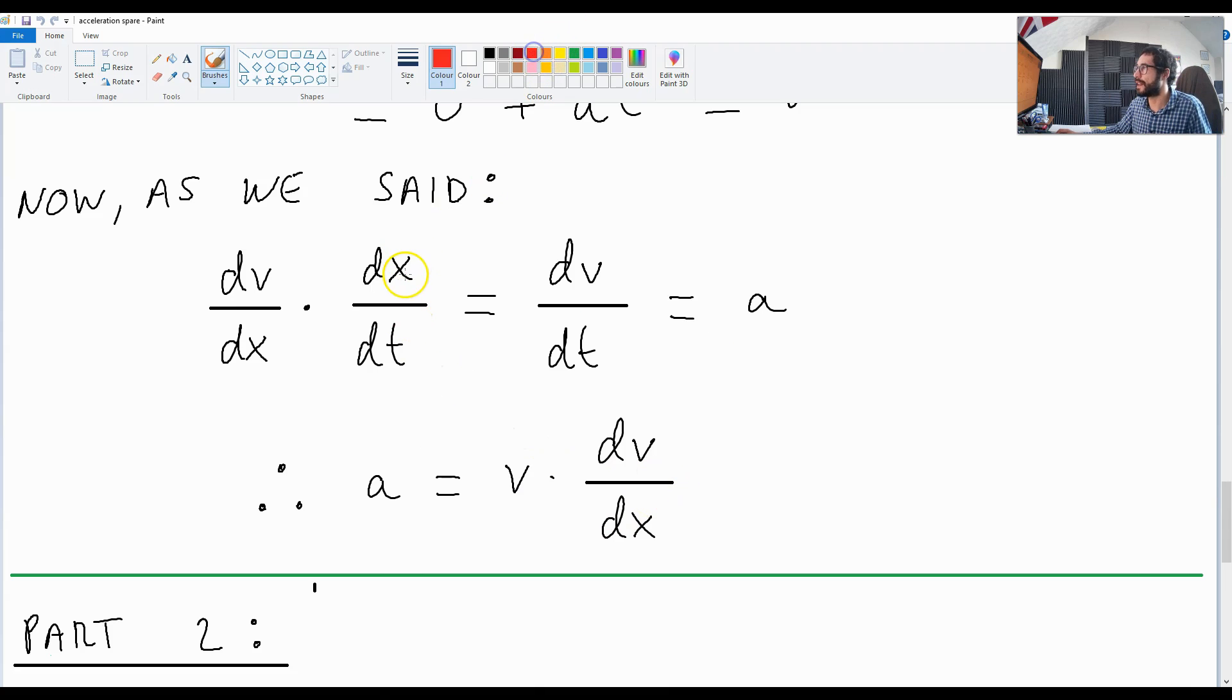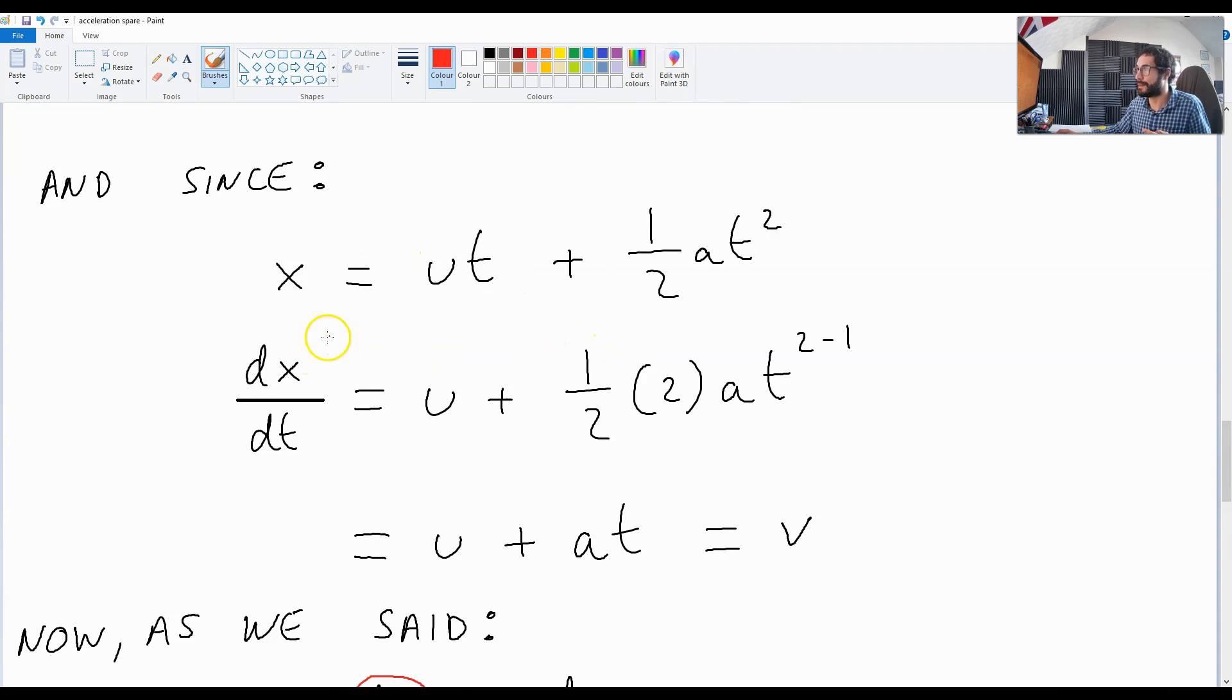So what we're doing is we're saying this over here, and we're replacing dx over dt, which we have here with v. If you'd like to see how this is differentiated, you can obviously watch this video very carefully once again.